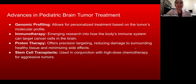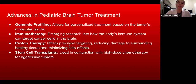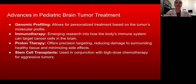Advances in pediatric brain tumor treatment include genomic profiling, which allows for personalized treatment based on the tumor's molecular profile. Immunotherapy involves emergent research into how the body's immune system can target cancer cells in the brain. Proton therapy offers precision targeting, reducing damage to surrounding healthy tissue and minimizing side effects. Stem cell transplants are used in conjunction with high-dose chemotherapy for aggressive tumors.